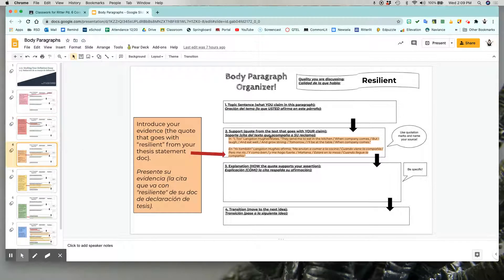Then you can move on to number two here, which is support. And all that is is the quote from the text that goes with your claim. So you should already have these quotes picked out. This is what we did with that brainstorming graphic organizer. So the quote that I had chosen that ended up with me saying that Americans are resilient is this one from Langston Hughes. So all I did was copy and paste the quote from my brainstorming organizer onto here.